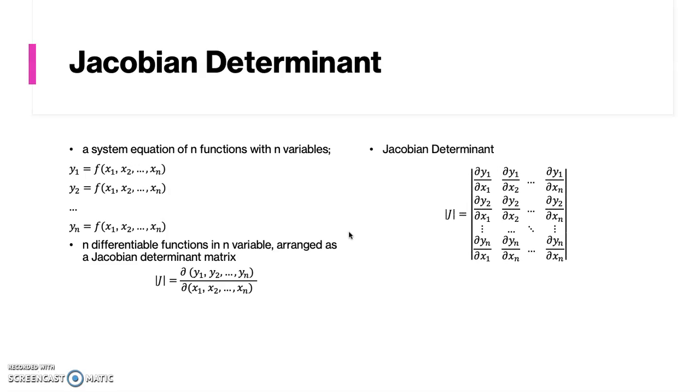it has the following form, where the first row is the partial derivative of the first equation, the second row is the partial derivative of the second equation, and so on, until the nth row, which contains the partial derivative of the nth equation.